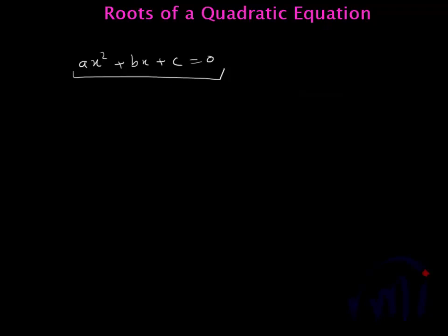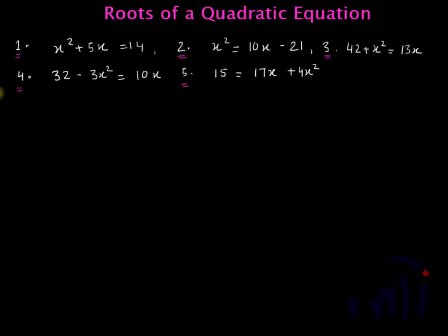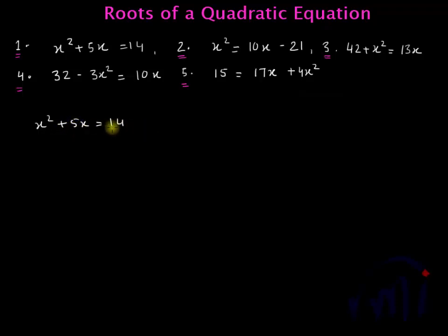So how to solve it? Let's take a few examples. The first problem is x squared plus 5x is equal to 14. The first step when solving a quadratic equation using factorization is to bring everything to the left hand side of the equals sign so the right hand side is 0, and then arrange the terms in decreasing order of the powers of x.